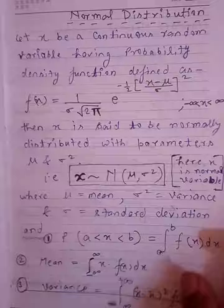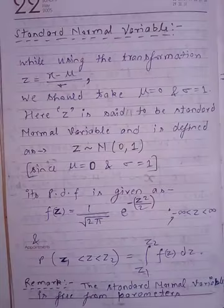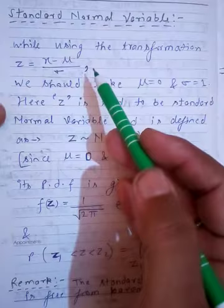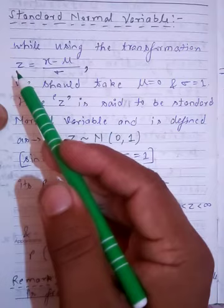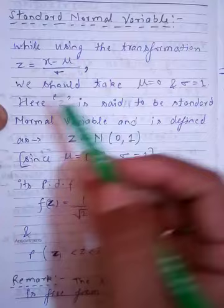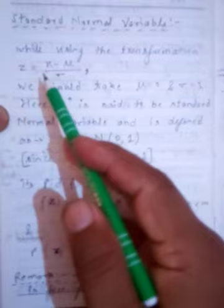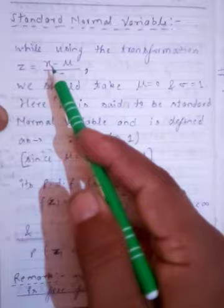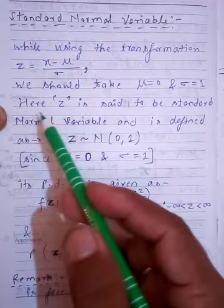Now let us talk about a term called the standard normal variable. When we convert a normal variable x into a standard normal variable z, we use the transformation: z = (x - mu) / sigma. If the mean mu is 0 and standard deviation sigma is 1, then z = x. So when mu equals 0 and sigma equals 1, the normal variable becomes the standard normal variable.